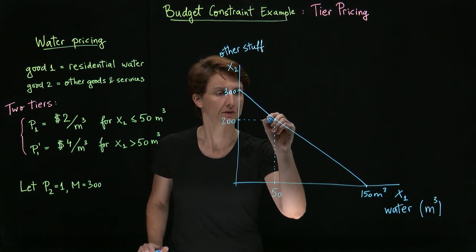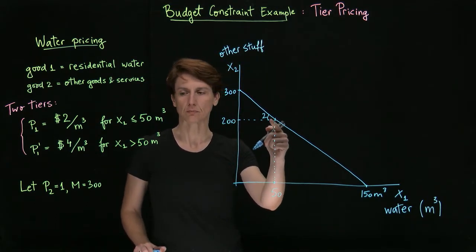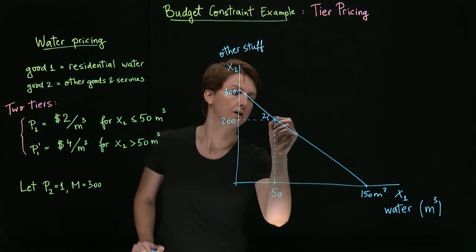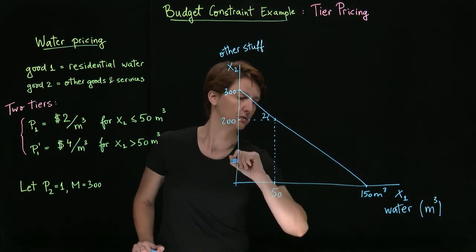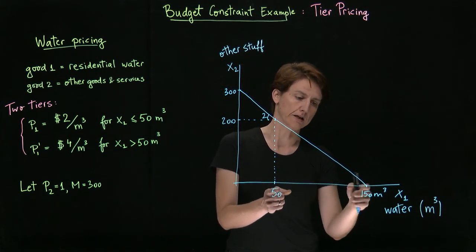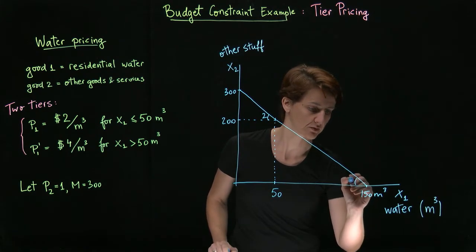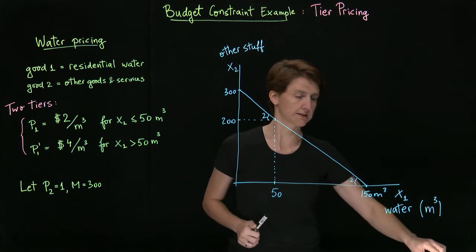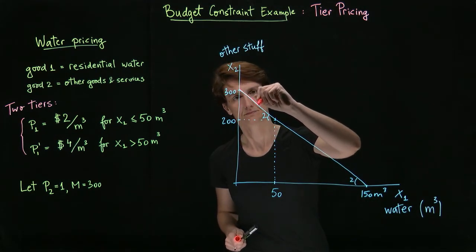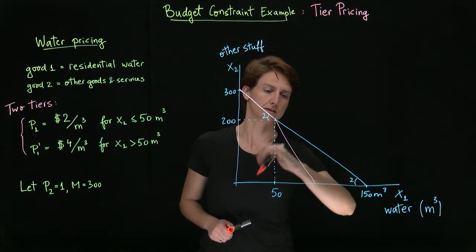Which means that we've spent a third of our budget on water. So the slope here is two, but any water we consume past that threshold is going to now cost us twice as much. So as we continue, we're going to be able to buy half as much extra water as we could when the price was two. So this would have been two, but instead the tiered pricing will lead to a budget constraint that bends in.